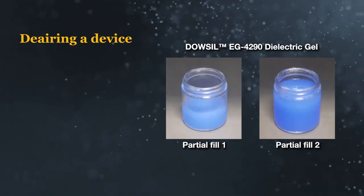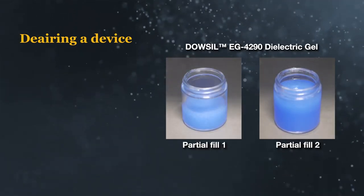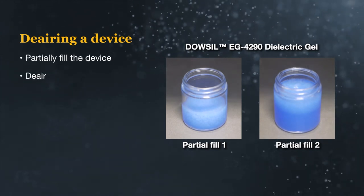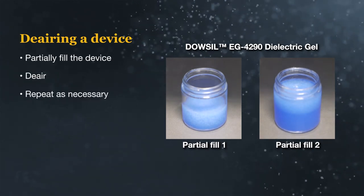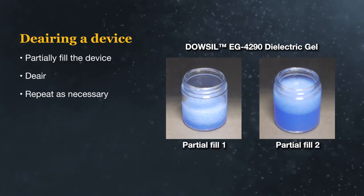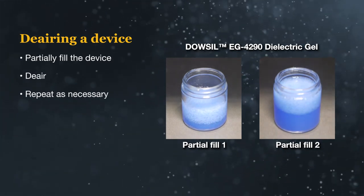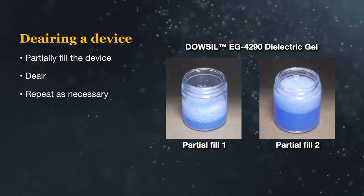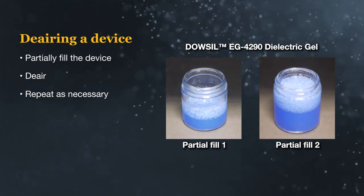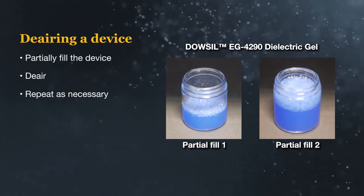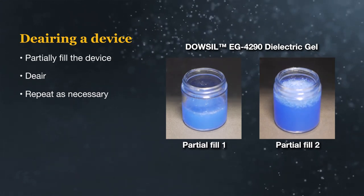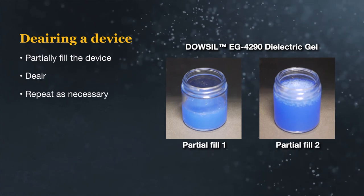To avoid overflow when de-airing parts, it is often best to partially fill a part, de-air, then repeat until the fill is complete. This allows foaming to be controlled in thinner sections, preventing overflow. Any trapped air under components should be removed during the first de-air. It may not be necessary to repeat the de-airing process for subsequent layers, since the component should be encapsulated by the first layer.